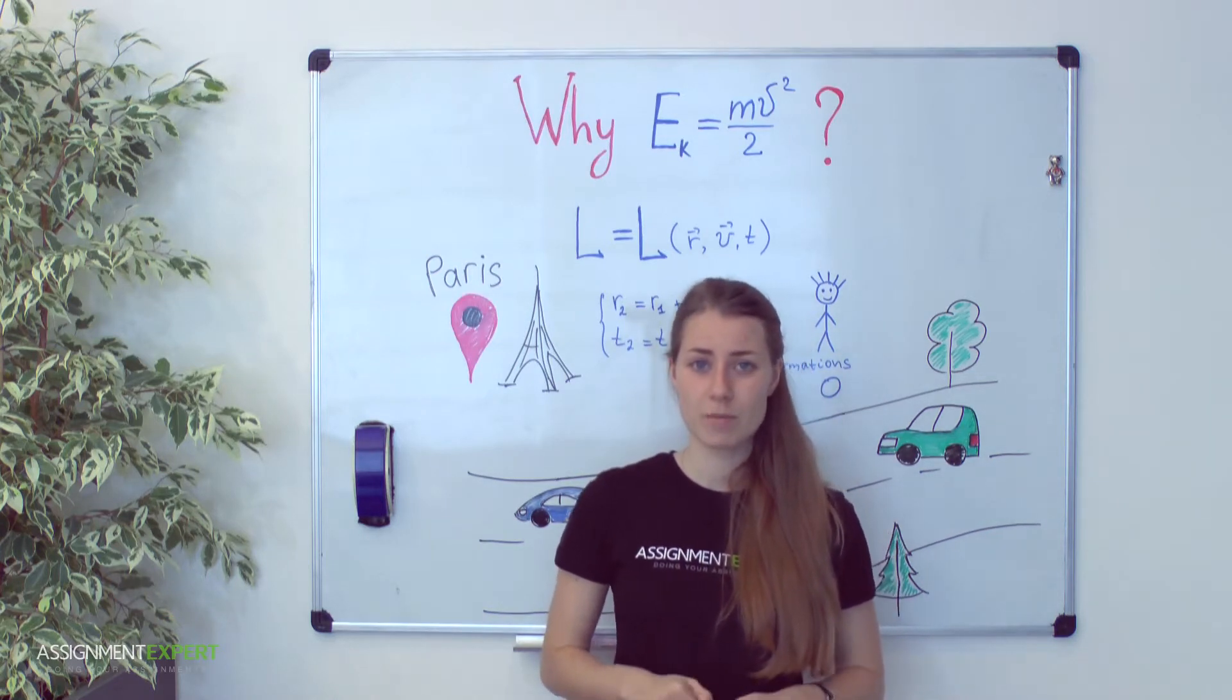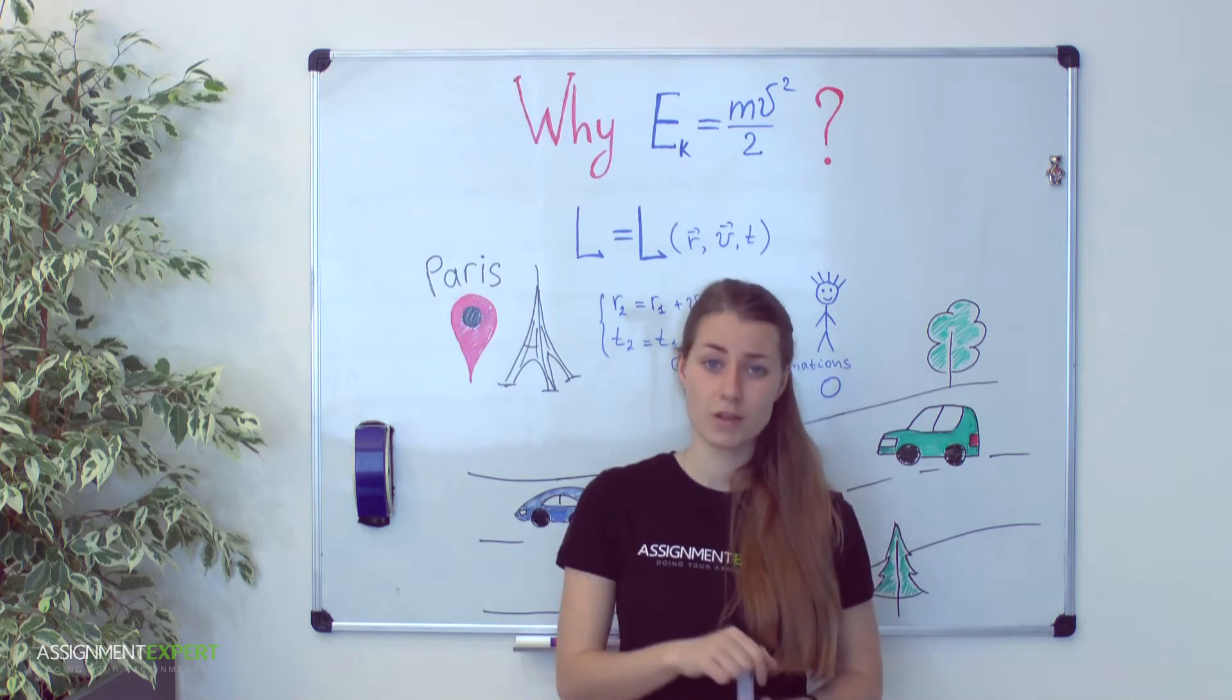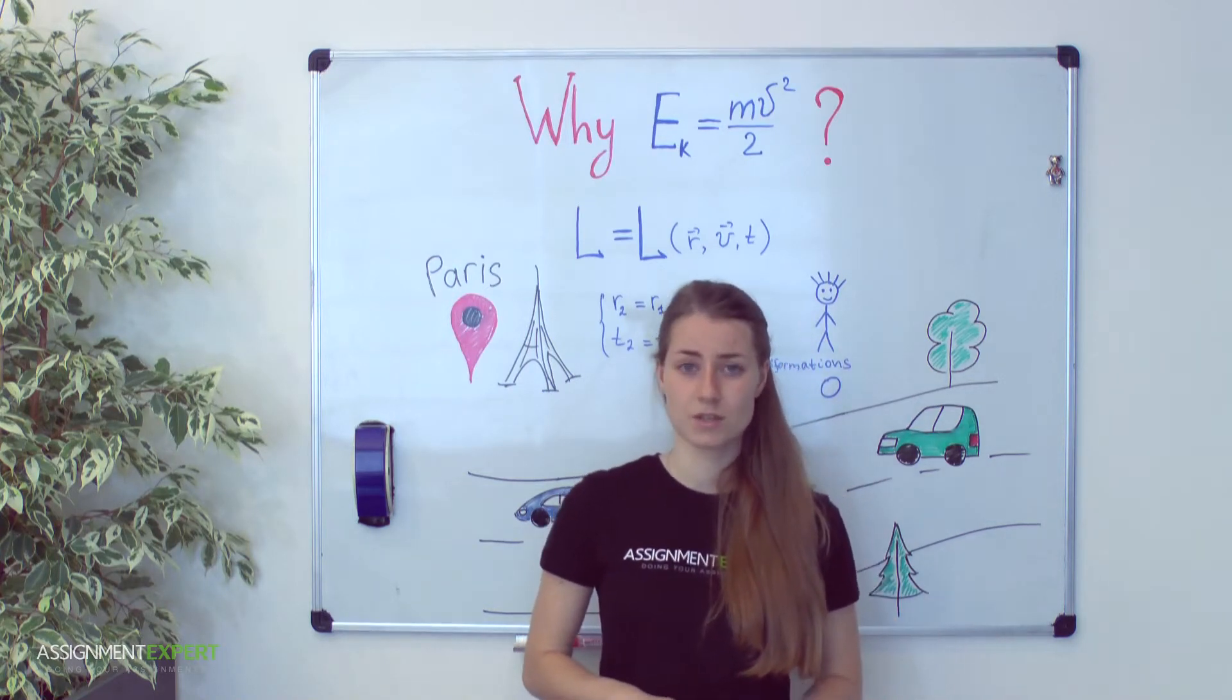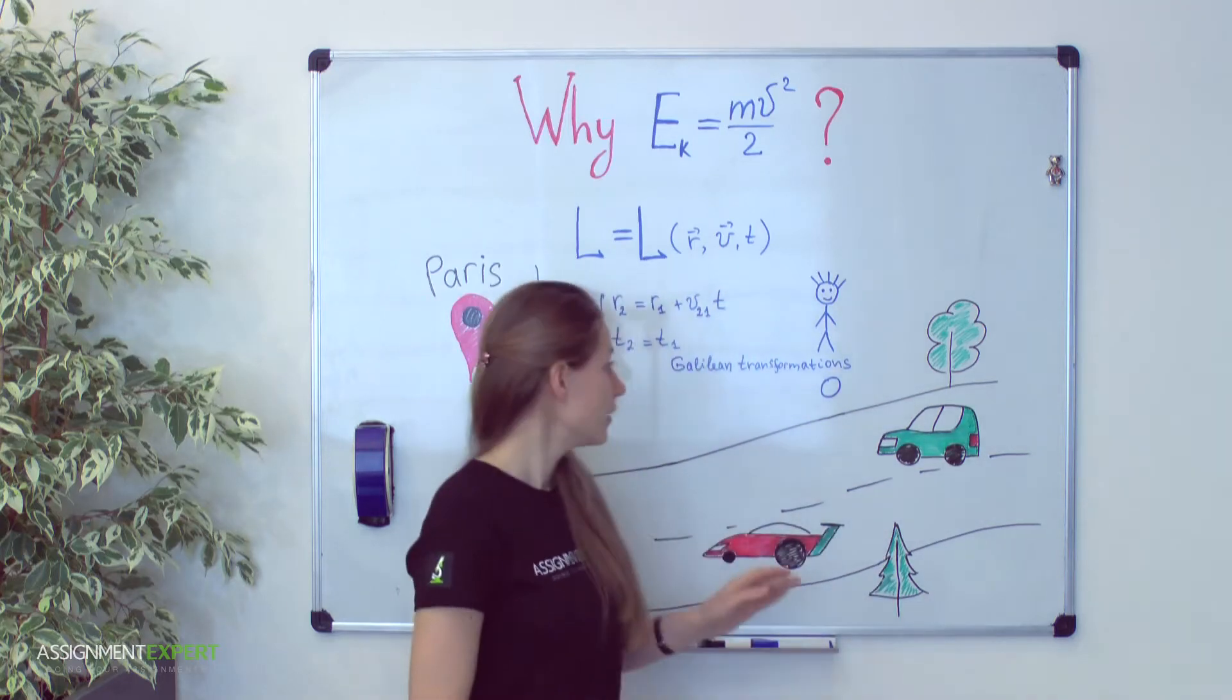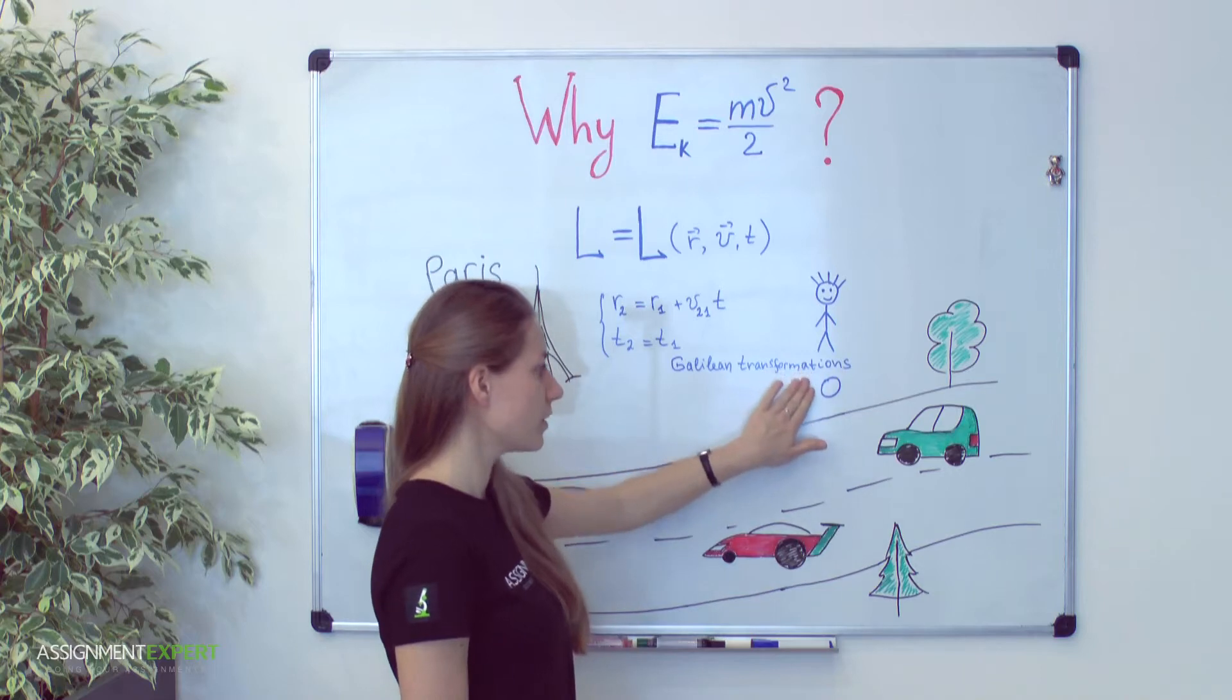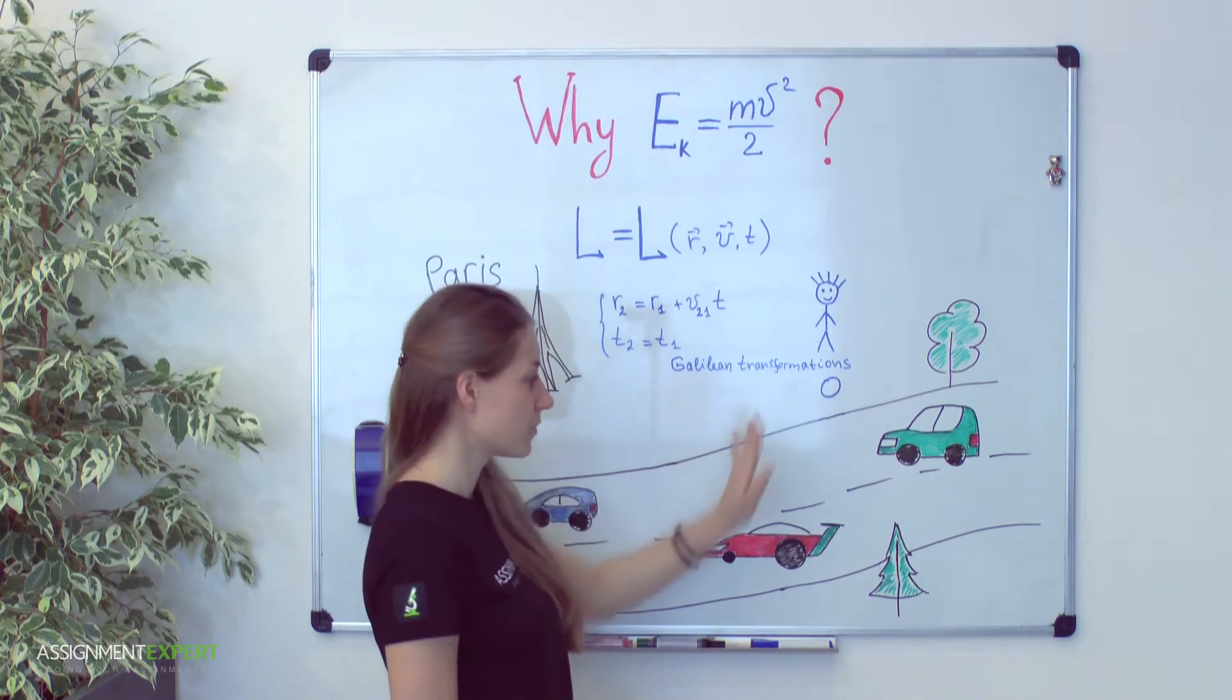Inertial reference frame is a coordinate system which moves with regard to other coordinate systems with constant velocity. This notion is easy to understand.